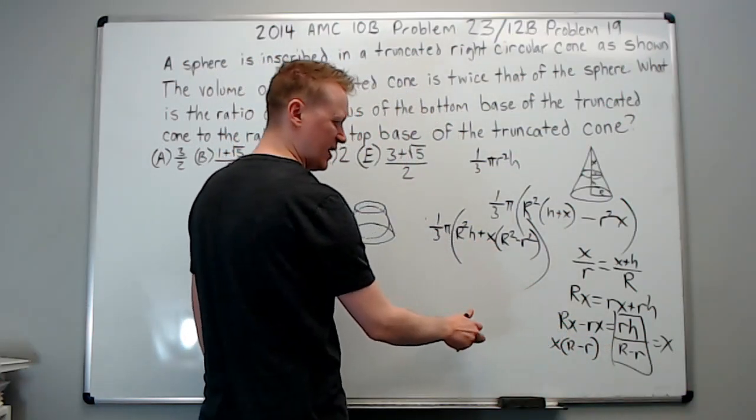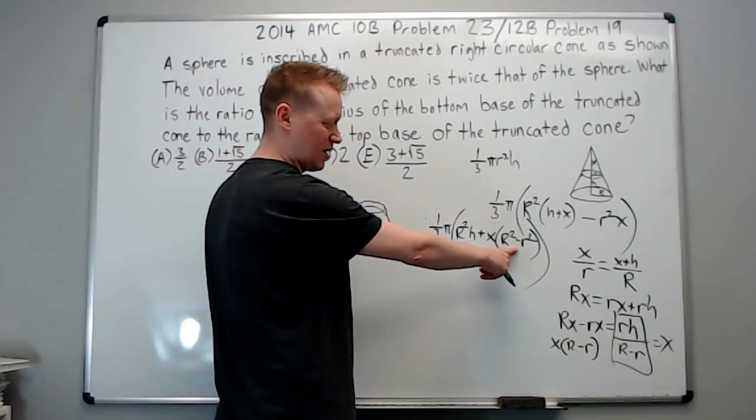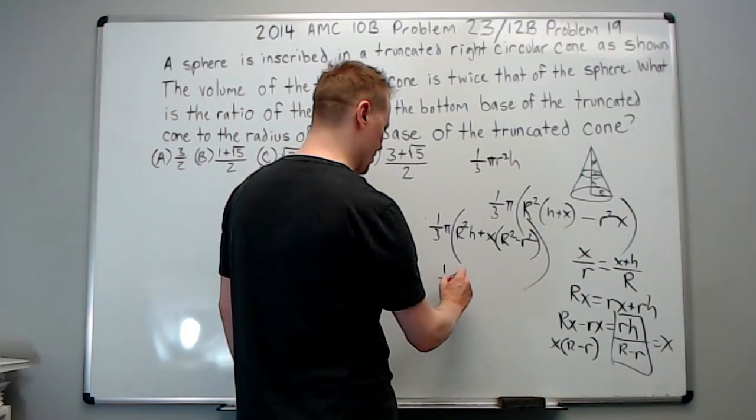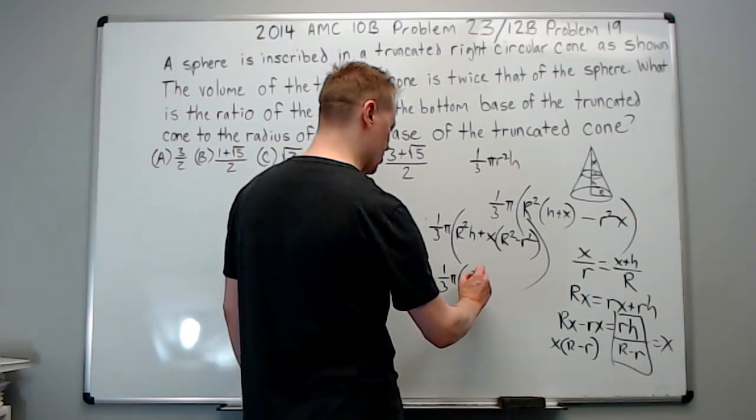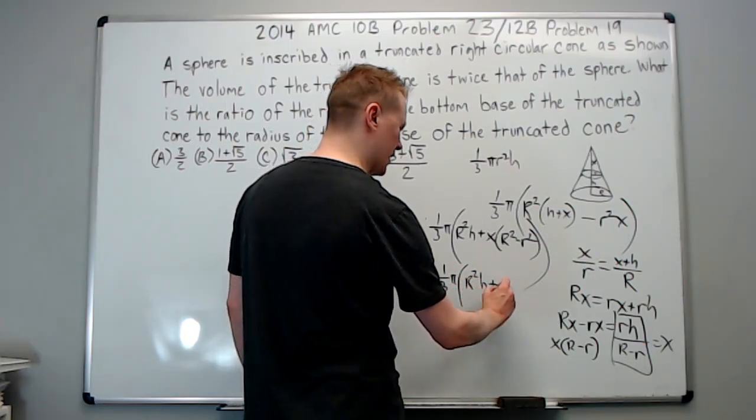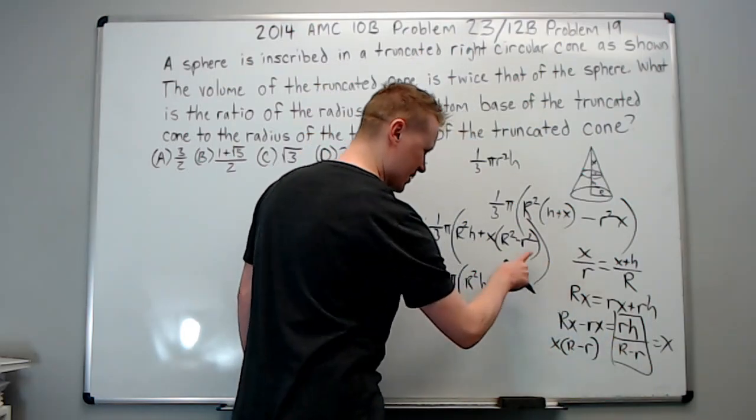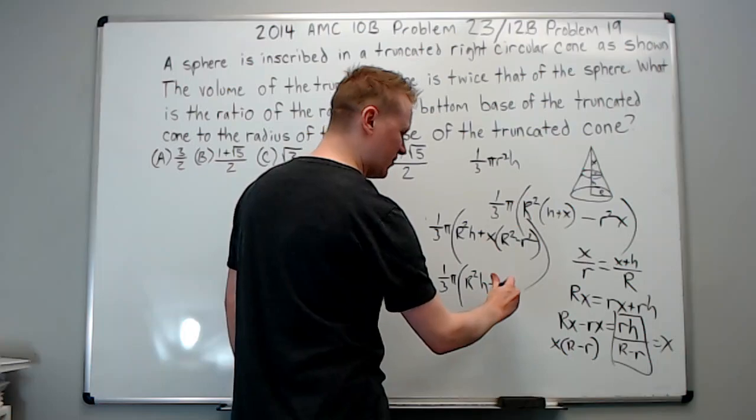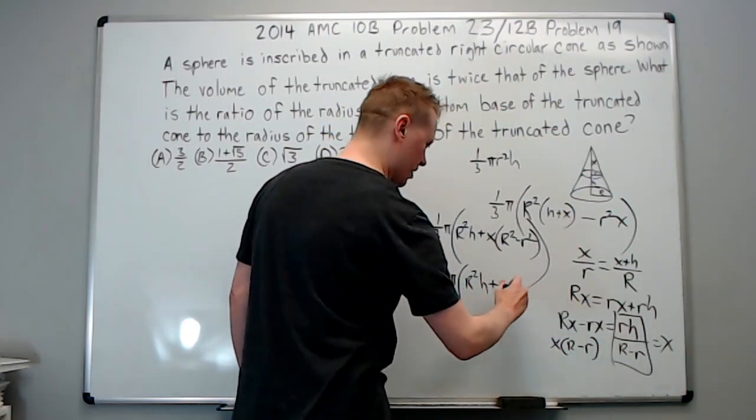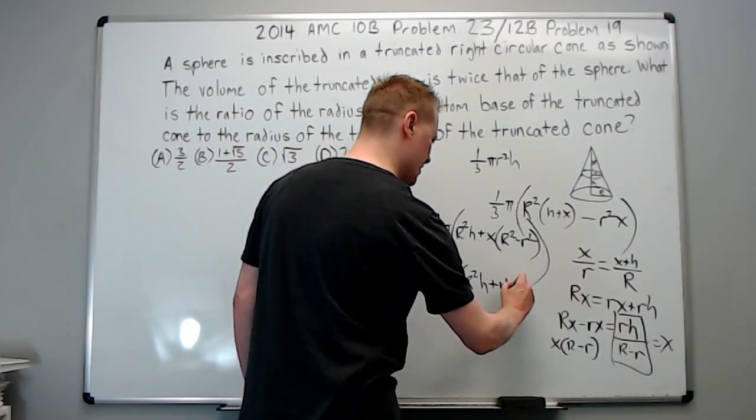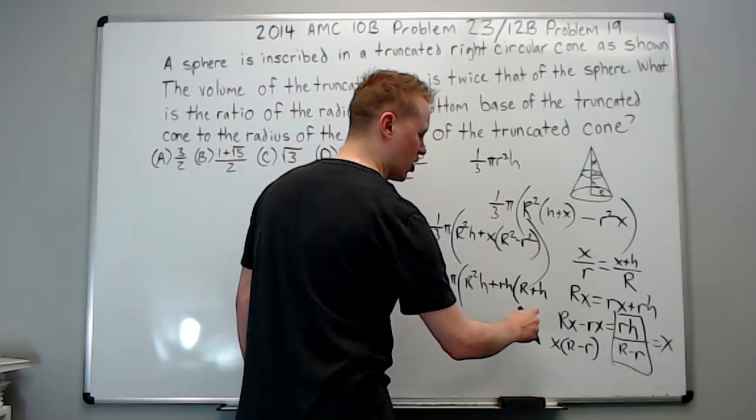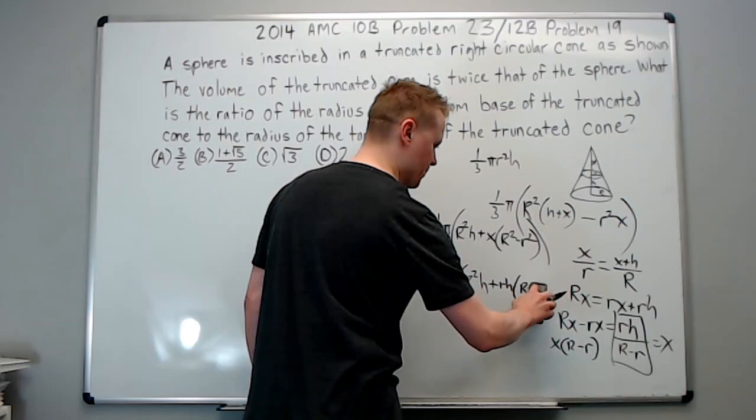Just like that. Now if I replace the x, which is this expression, this is R plus r, R minus r, right? So it's going to give 1/3 pi R squared h plus this cancels into that. I'm trying to save a little bit of time. So that's going to leave us with the numerator rh times R plus r.